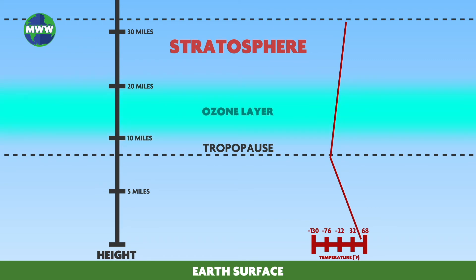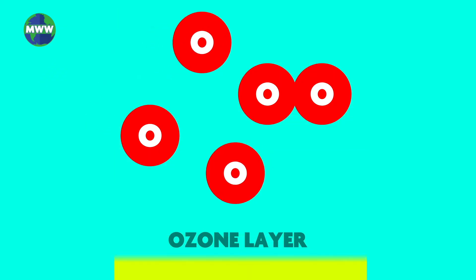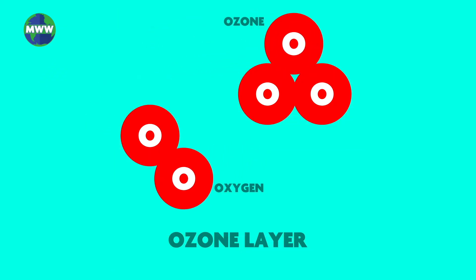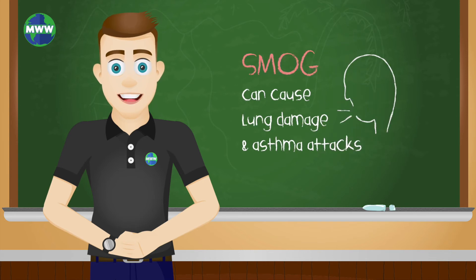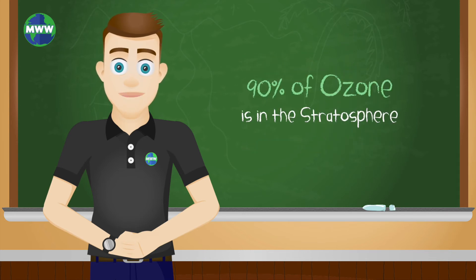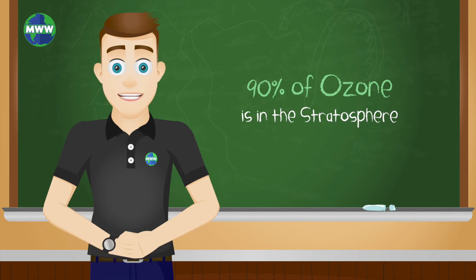The ozone layer found in the stratosphere protects our planet like sunscreen does for your skin. This layer absorbs harmful UV-C and UV-B rays from the sun. UV rays constantly break down and reform ozone and oxygen molecules in the ozone layer. Ozone can form near the ground, known as smog, which can cause lung damage and asthma attacks. Fortunately, 90% of ozone is in the stratosphere.